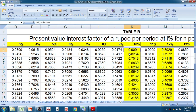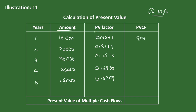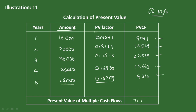At 10 percent: first year factor 0.9091, second year 0.8264, third year 0.7513, fourth year 0.6830, fifth year 0.6209. Multiply each amount by the present value factor: you get 9,091 then 16,529 then 22,539 then 13,660, and last year 15,000 into 0.6209 gives 9,314. Total of all individual present values gives 71,133 rupees.